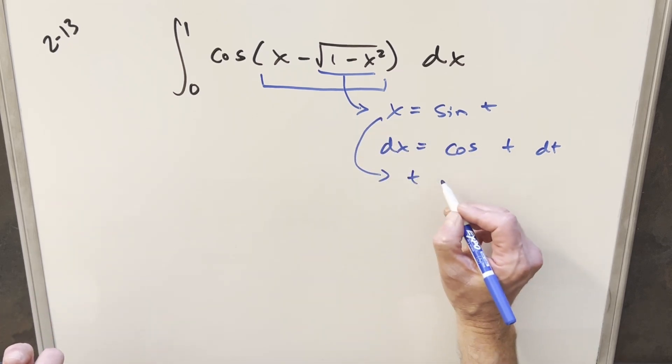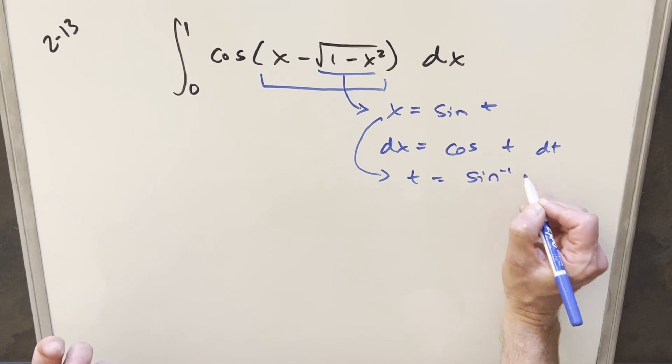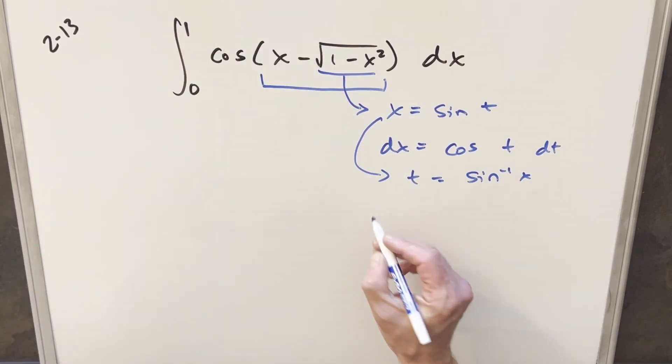Taking the inverse on both sides we're going to have t equal to arc sine of x. And actually one other thing I'll do is let's just get this value for this square root of 1 minus x squared and see how that goes. So this is going to become square root of 1 minus